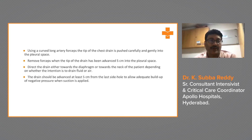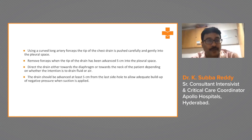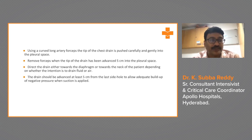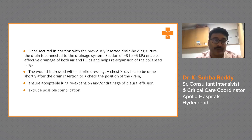Using curved long artery forceps, push the tip of the chest drain carefully and gently into the pleural space, then remove the forceps. Advance the tip of the drain five centimeters into the pleural space. Direct the drain either towards the diaphragm or towards the neck depending on whether the intention is to drain fluid or air. The drain should be advanced at least five centimeters past the last side hole to allow adequate buildup of negative pressure when suction is applied.